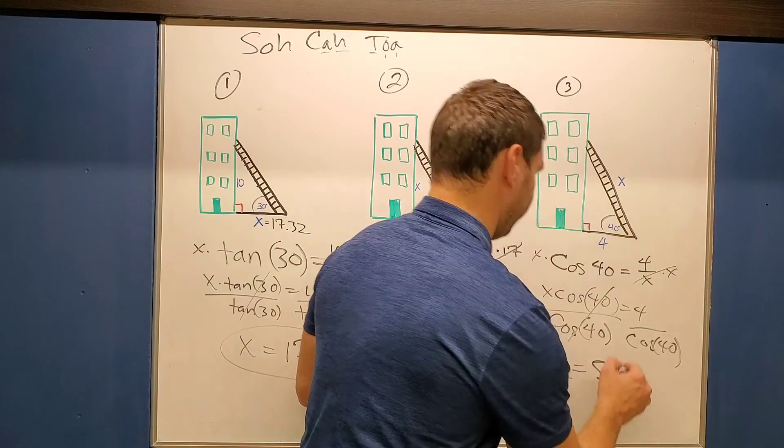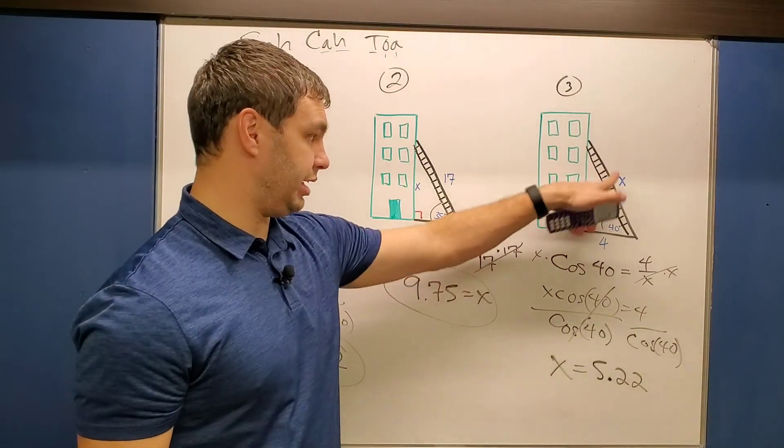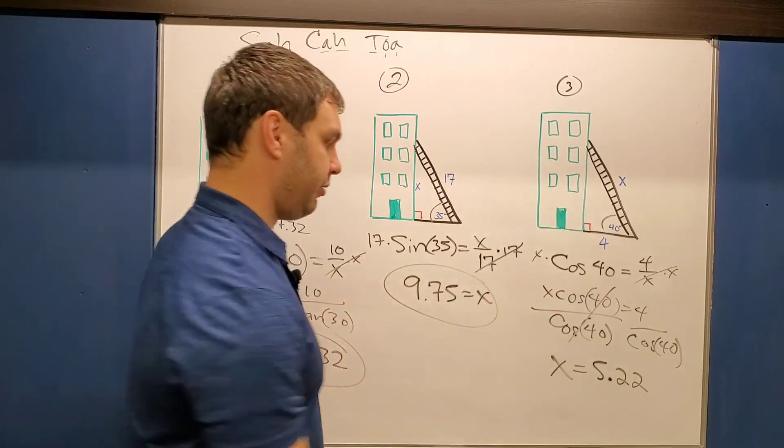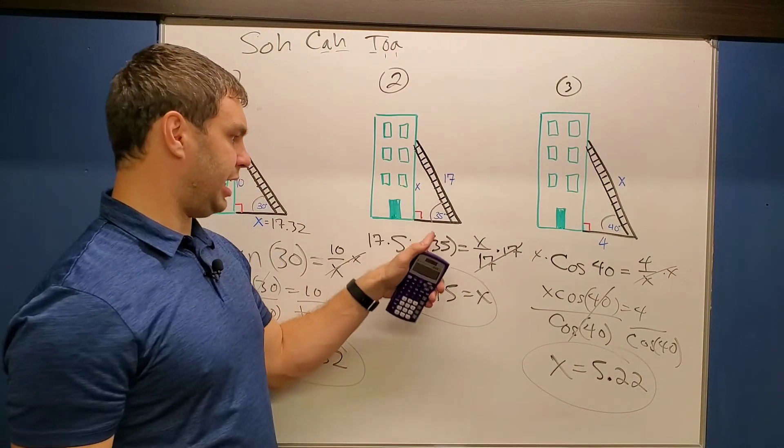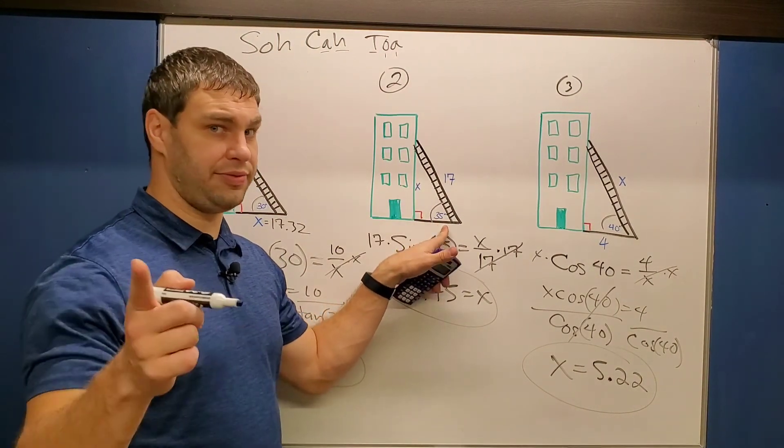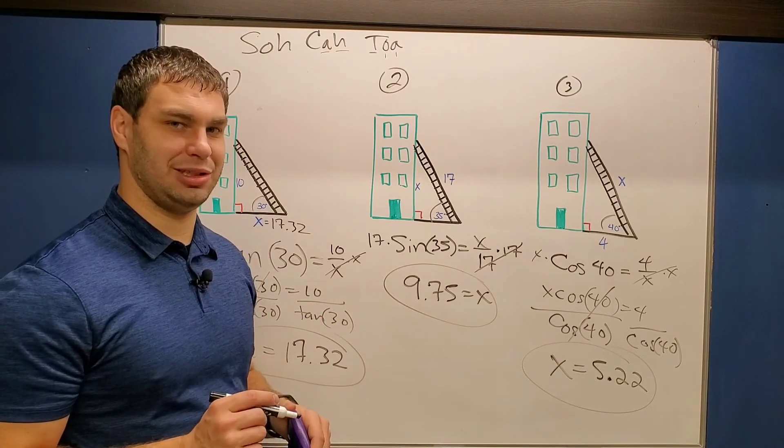Our hypotenuse, which is represented by the ladder in this case, is our longest side. Is this longer than the other one I know? Yes it is. Therefore, I probably did it correctly. So you need to solve for these lengths sometimes, but what if you need to find the angle? If you need to find the angle, check out this video over here, and that'll tell you everything you need to know to find angles in right triangles.